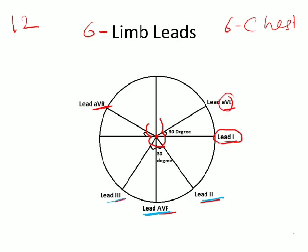It is important to remember that aVL and aVR both make an angle of 30 degrees with the horizontal, and Lead II and Lead III make an angle of 30 degrees with the vertical. This will prove crucial while calculating the cardiac axis, so please draw this diagram as it will help tremendously in the future.